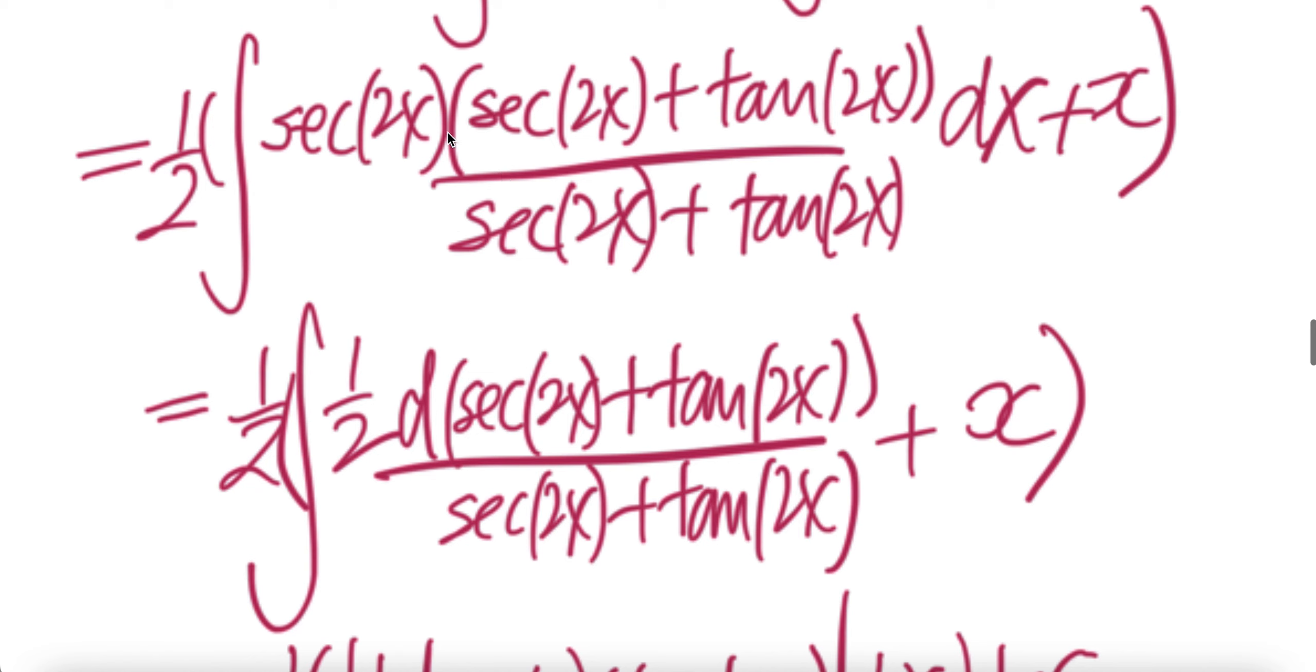Now notice that this is sec squared 2x and then sec 2x tangent 2x. The derivative of sec 2x is sec 2x tangent 2x times the derivative of 2x, which is 2, but there's no 2 here. You need a half. Similarly, the derivative of tangent 2x is sec squared 2x times the derivative of 2x, which is 2. There's no 2, so you need a half.